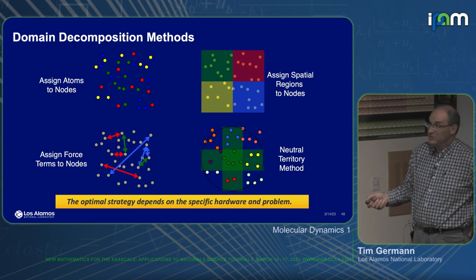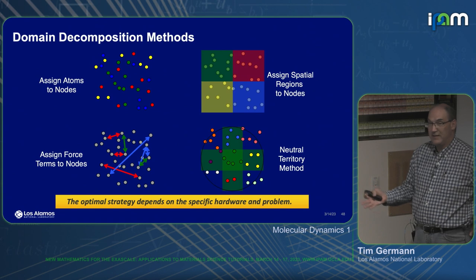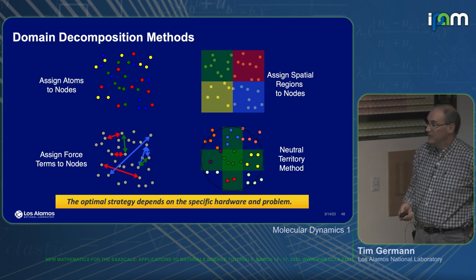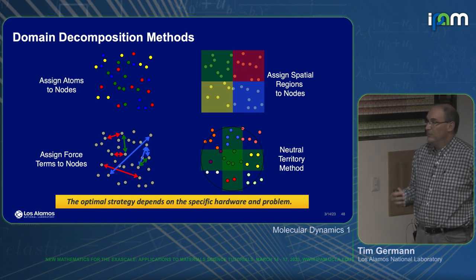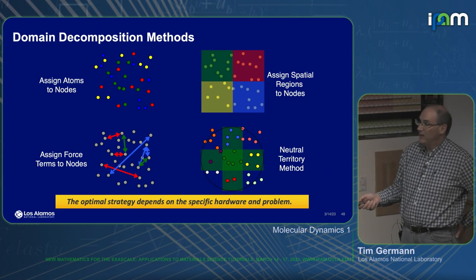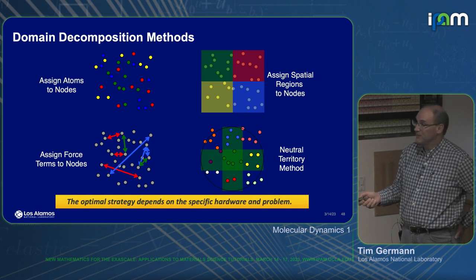There are other approaches: you can just assign atoms to nodes. For some of the more strong-scaling cases to reach a few atoms per processor rank, you can assign force terms to nodes — the so-called neutral territory method that the Anton machine uses. Each of these, depending on the system you want to study, the conditions, how much atoms are moving around, and the hardware you have, may each be optimal in some cases. But the spatial decomposition approach is the one that most parallel MD codes still use.